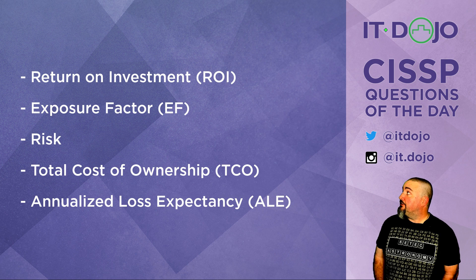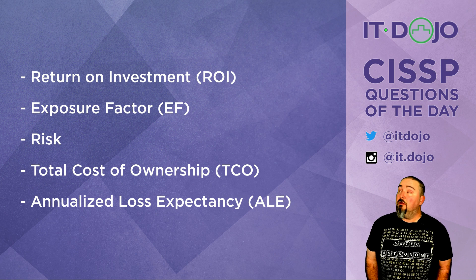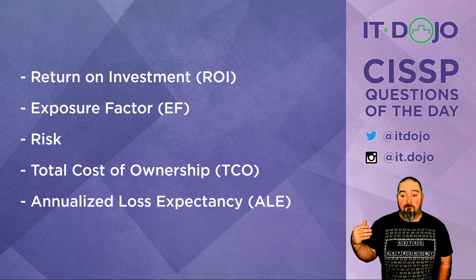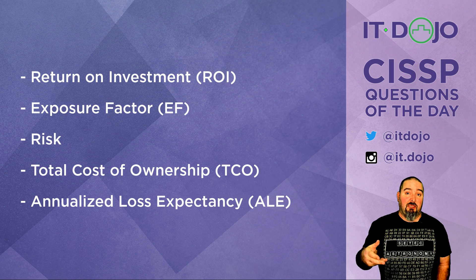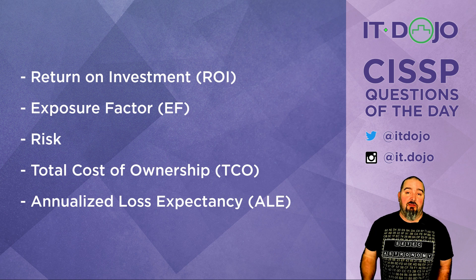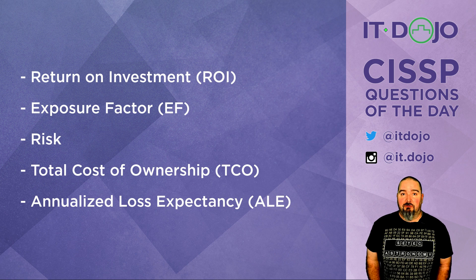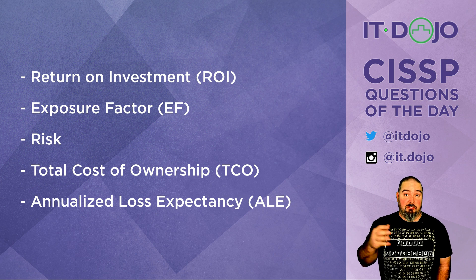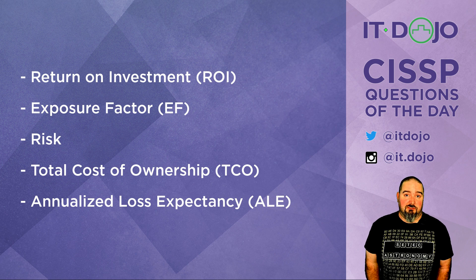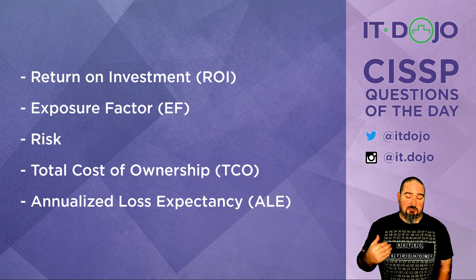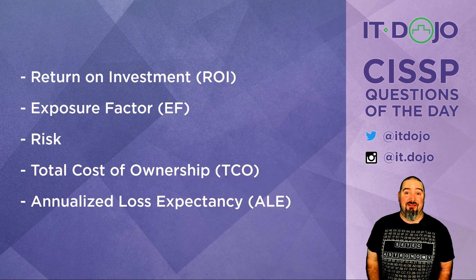The first answer choice says return on investment, and that is not the answer. Return on investment is a measure of the benefits of an investment — how much you made or saved as a result. In this context, it would be how much you saved by implementing a safeguard: you take the cost of the safeguard and the corresponding reduction in loss to get an ROI value. But that's not the answer today.